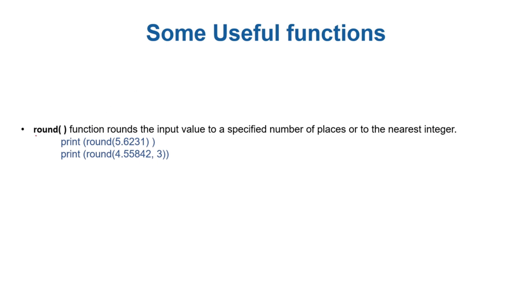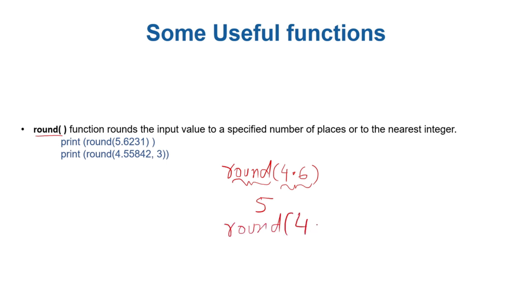For example, the round function — if you give round 4.6, that 4.6 is a floating-point number and rounding means make it an integer. What round does is it finds the nearest integer to 4.6, and the nearest integer is 5 because 5 is closer to 4.6 than 4. However, if you call round on 4.3, the result will be 4 because 4 is closer to 4.3 than 5.